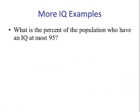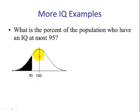Next example. What is the percent of the population who have an IQ score at most 95? At most means less than. So we draw our picture, mean is 100 and it's in the middle. 95 is below 100, and we're wanting the area to the left because we want at most, and that means less than.